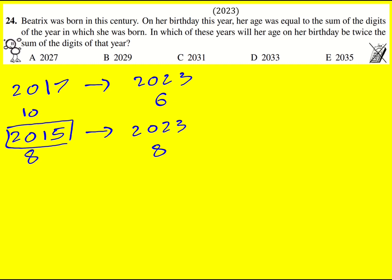So in which of these years will her age on her birthday be twice the sum of the digits of that year. So what I then did is I just considered each one in turn.